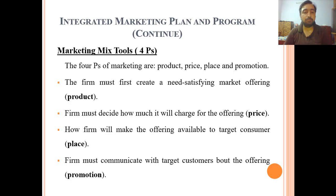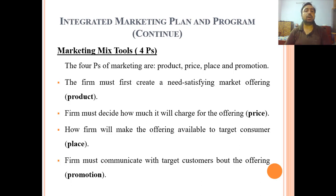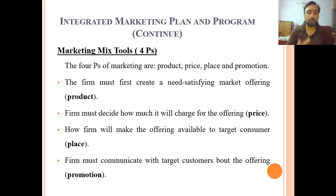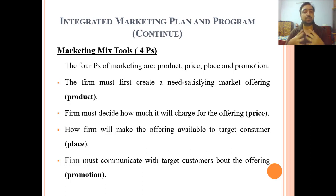Next, how will the firm make the offering available to the consumer — place. Firm kis tarah se apni offering, yani product or services, consumer tak pehunchaayegi — ke company direct customer tak pehunchaegi through retailers, wholesalers, online, ya kya tarika hoga unka customer tak apni product or service pehunchaane ka. Firm must communicate with target customers about the offering — promotion. Firm ko communicate kerna chahiye apne target customer ko apni offering ke bare mein, means promotion or advertisement.